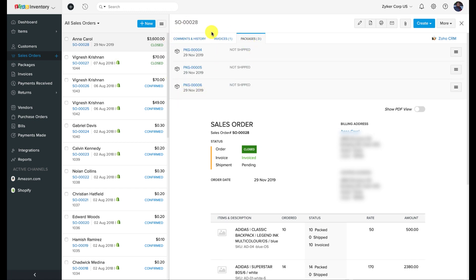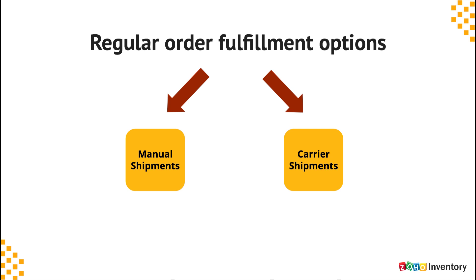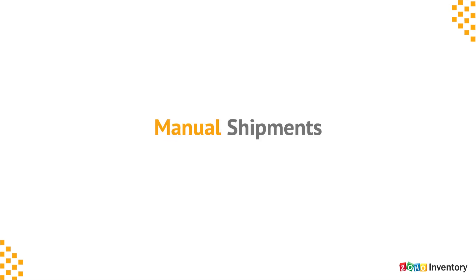Order fulfillment in Zoho Inventory is broadly classified into two types: manual shipments and carrier shipments.